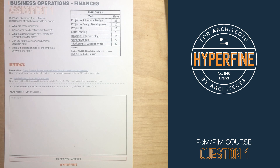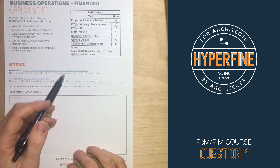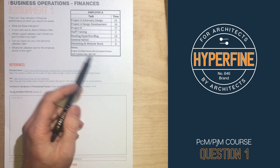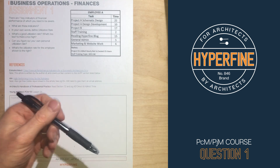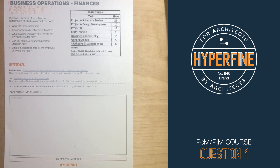Note that time on a project doesn't necessarily mean billable time. For example, if you have hours worked above an hourly not-to-exceed, those still count towards your utilization ratio even though you're not getting paid for them. If it's billed to a project, whether you get paid for it or not, that will increase your utilization ratio.